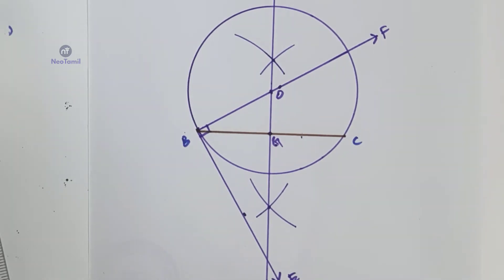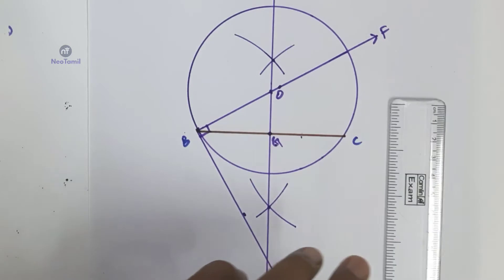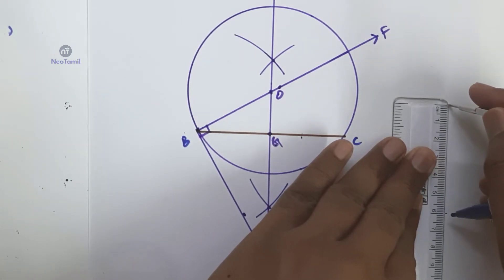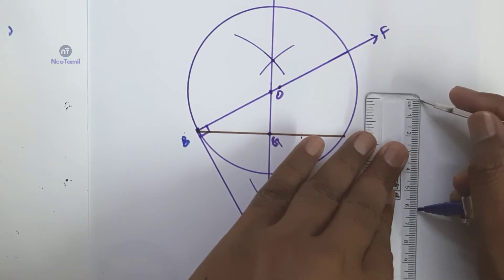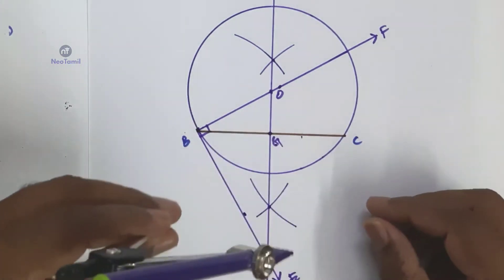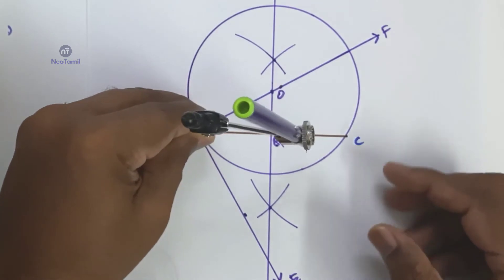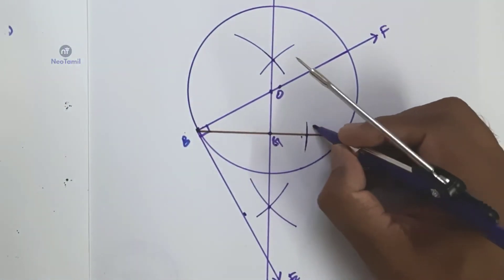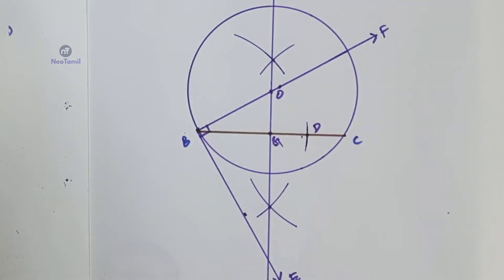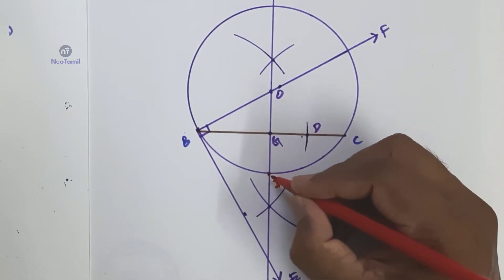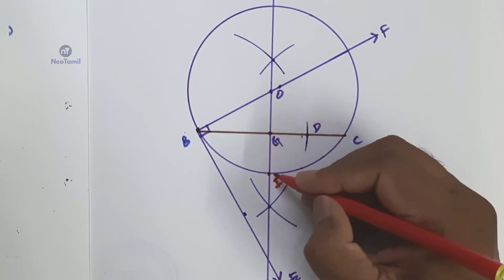Now, the angle bisector: BD is equal to 6 cm. From B, mark an arc of 6 cm on BC at D — the point D is marked on BC. The circle and the perpendicular bisector of ID meet at point I.